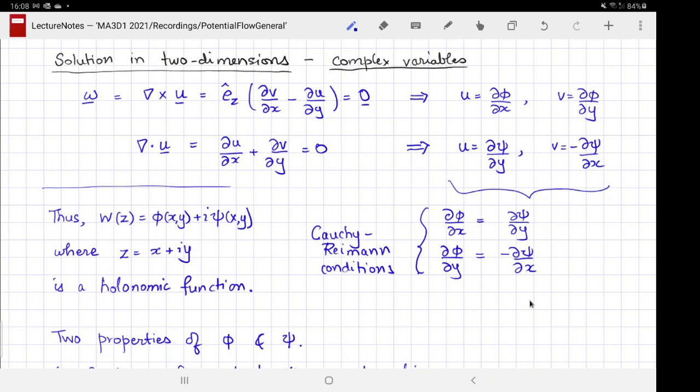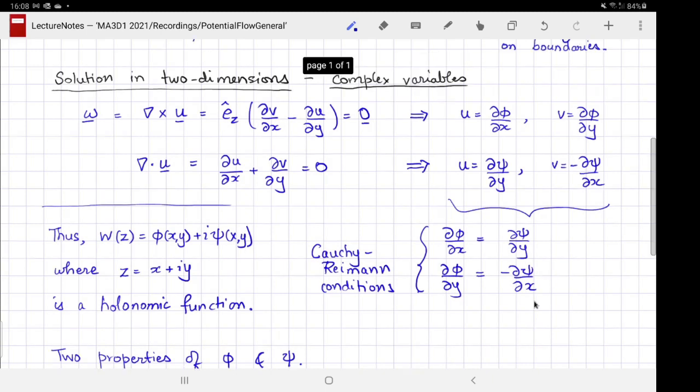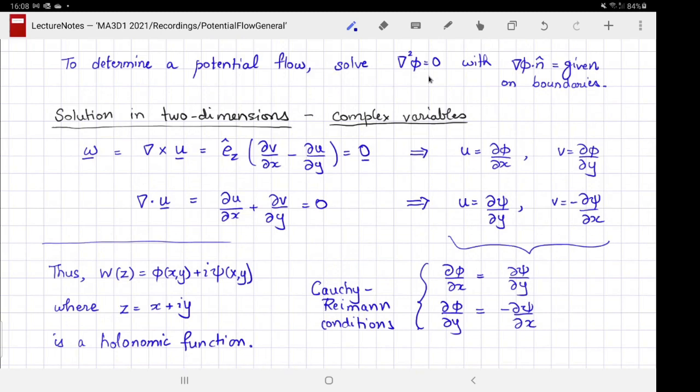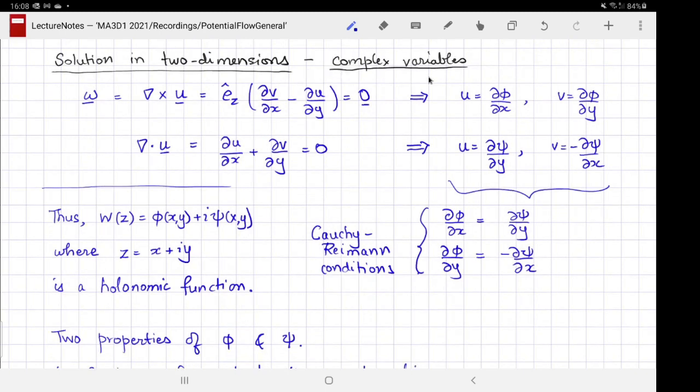It so happens that the treatment is extremely convenient in complex variables. Solving Laplace equation in two dimensions is essentially trivial using complex variables. The two conditions that we have are that the vorticity of the flow vanish and the divergence of the velocity vanish. If I write it down in Cartesian coordinates, the two components of velocity are u and v. The vorticity is given by del v del x minus del u del y along the z direction, and that vanishes. I can satisfy this condition trivially by noting that these are the cross derivatives.